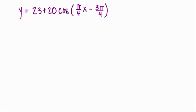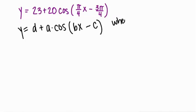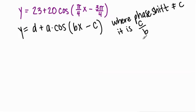Now real quick, if you are given an equation in this form y equals d plus a times the cosine of bx minus C, where the phase shift is no longer C, so the phase shift is not equal to C, it is C divided by B. Now that can be confusing so what I do is I just take the B out.